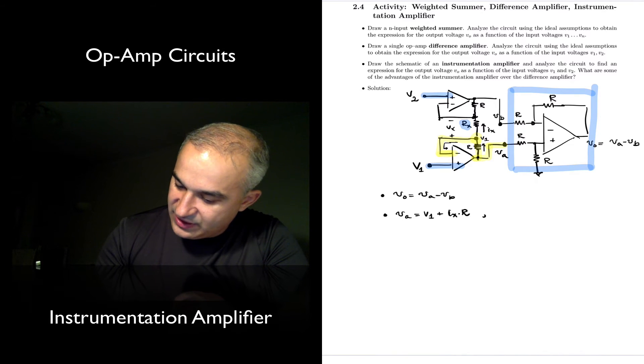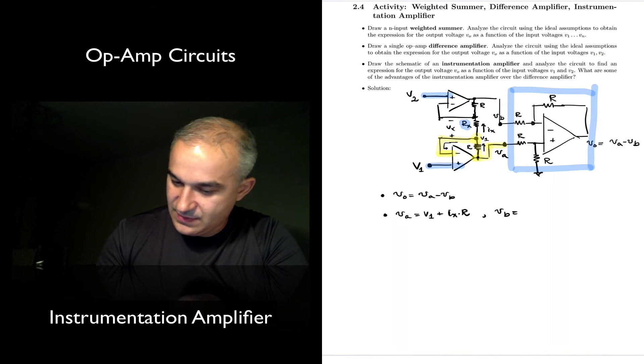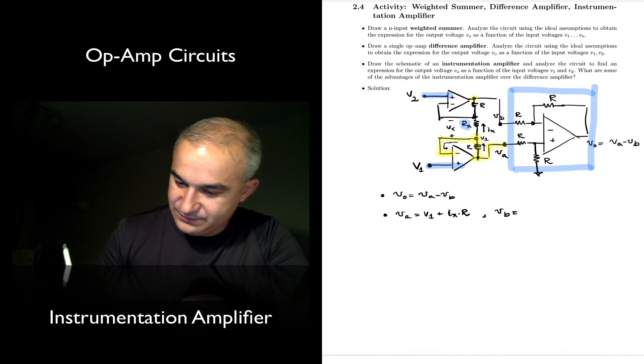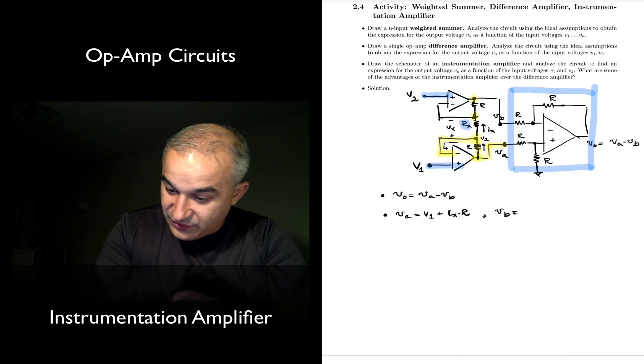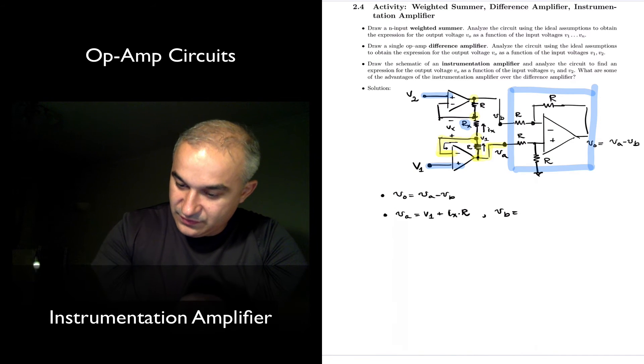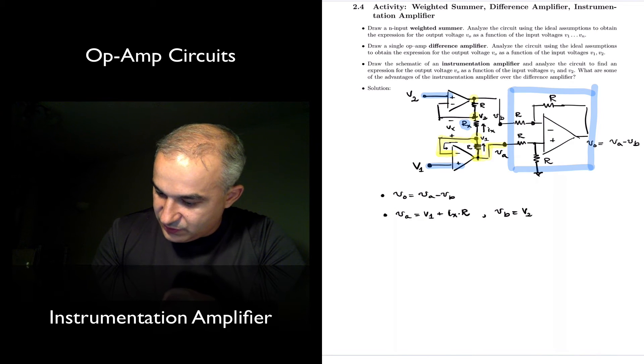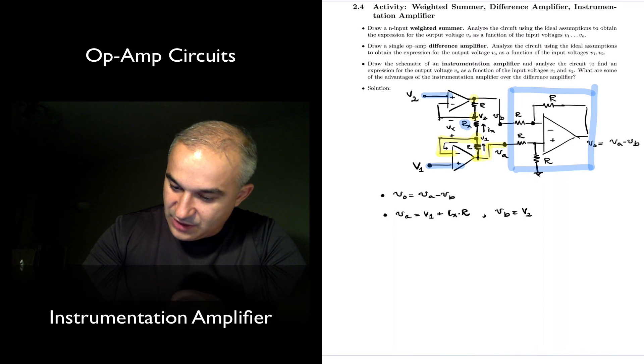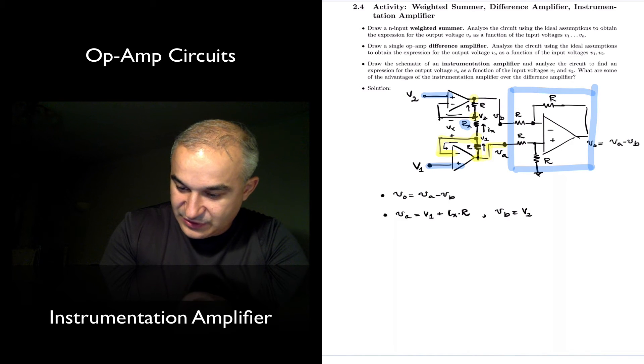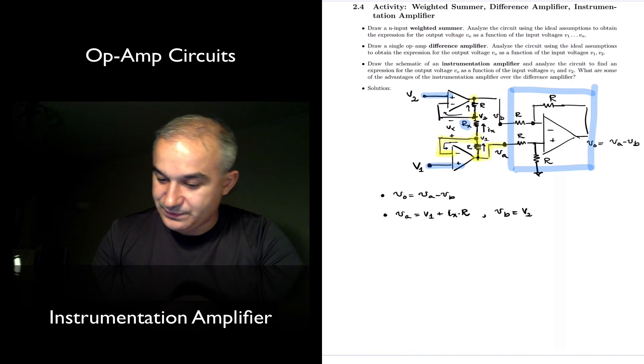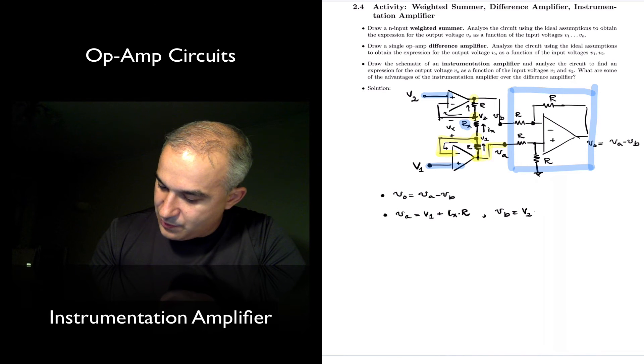Similarly, we have that VV, voltage right here, where we know the voltage is here - that's V2. So it's going to be V2 minus the voltage drop that we have, the current all going through there, which is Ix, because the current entering into this op-amp is also 0. So minus Ix times R.